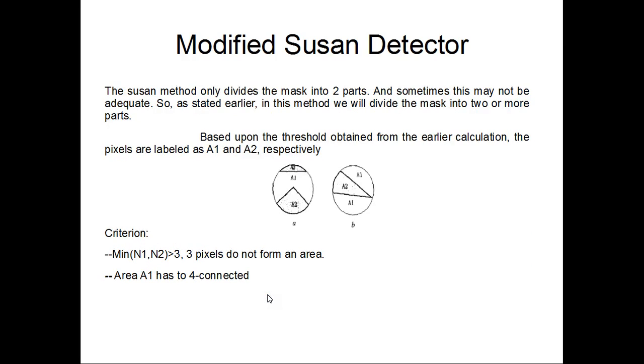The SUSAN method also only divides the mask in two parts and sometimes this may not be adequate. So in this method we will divide the mask into two or more parts. Based upon the threshold obtained from the earlier calculation, the pixels are labeled as A1 and A2 respectively. It was divided into A1 and A2 earlier, but here we have two regions and one of them can be comprising of two more regions and they are labeled as A1 and A2. Now they check to see if they follow this particular criterion: that the minimum of N1 and N2 is greater than 3 because three pixels do not form an area. So they at least have to be three. And A1 has to be four-connected.